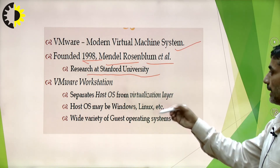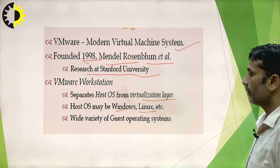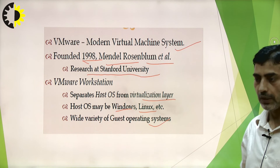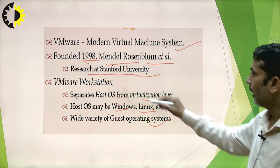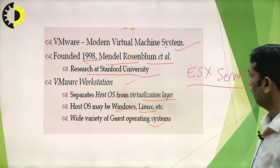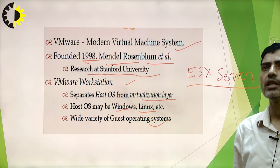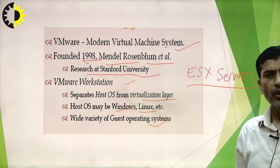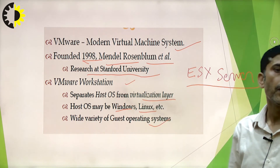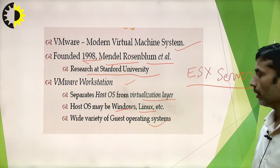VMware Workstation separates the host OS from the virtualization layer. The host OS may be Windows, Linux, etc., and it supports a wide variety of guest operating systems. There are two kinds of VMware virtualization software: VMware Workstation, which is designed to create virtual machines on laptops, PCs, or individual computers; and VMware ESX Server, which is designed for creating virtual servers.